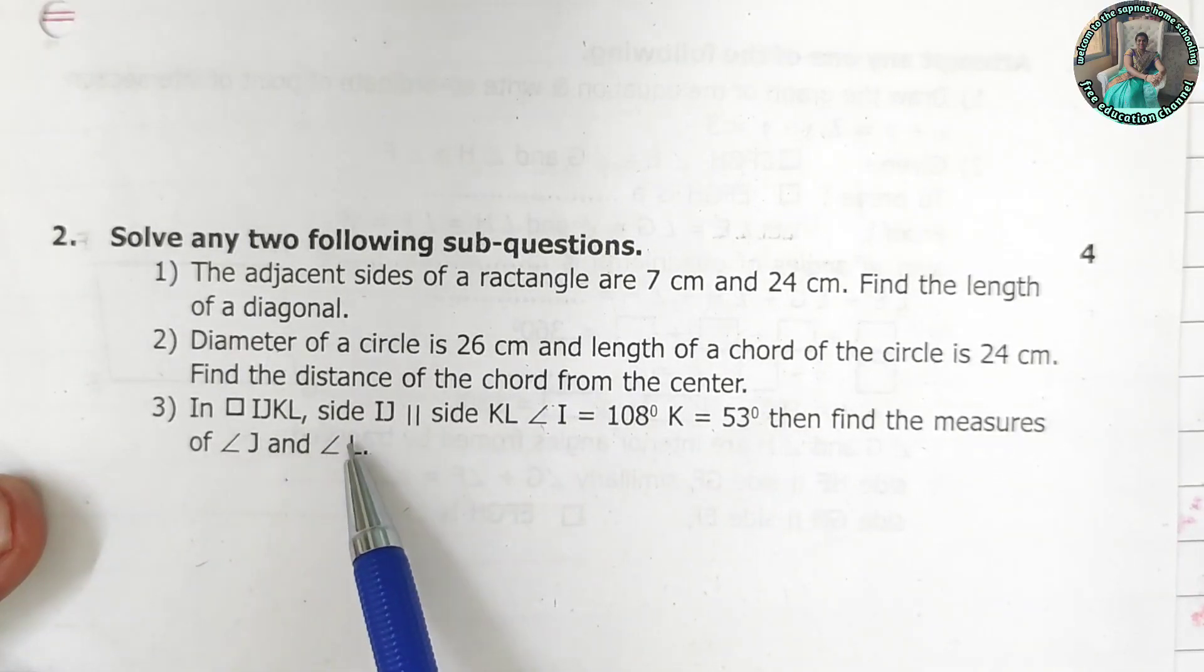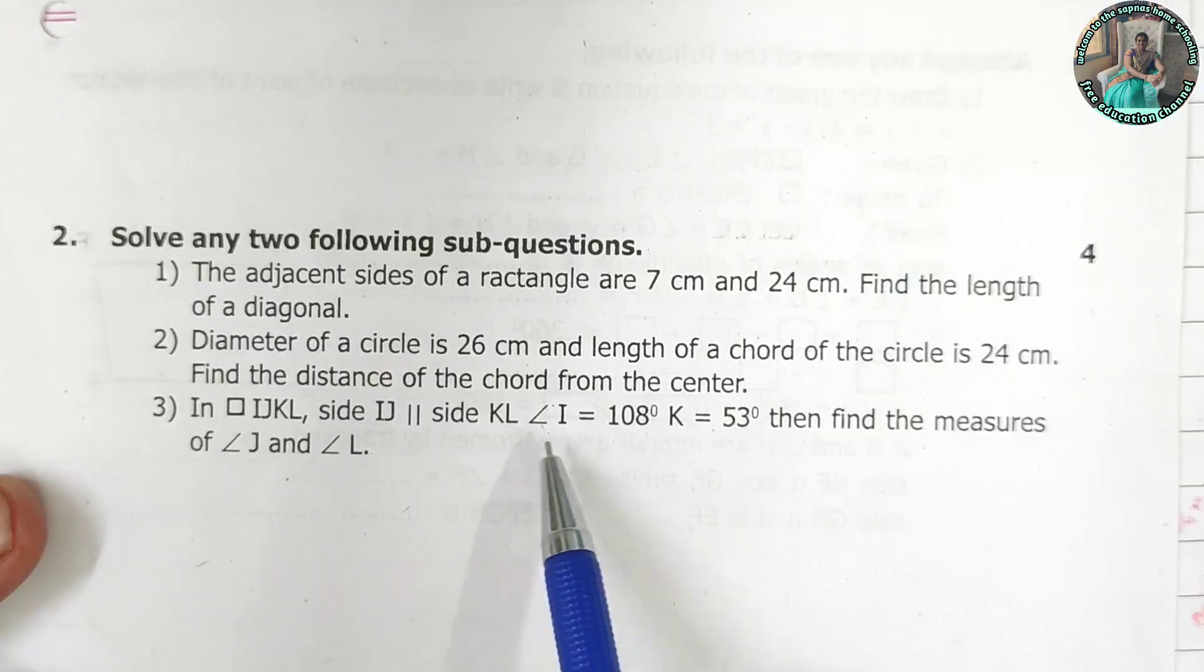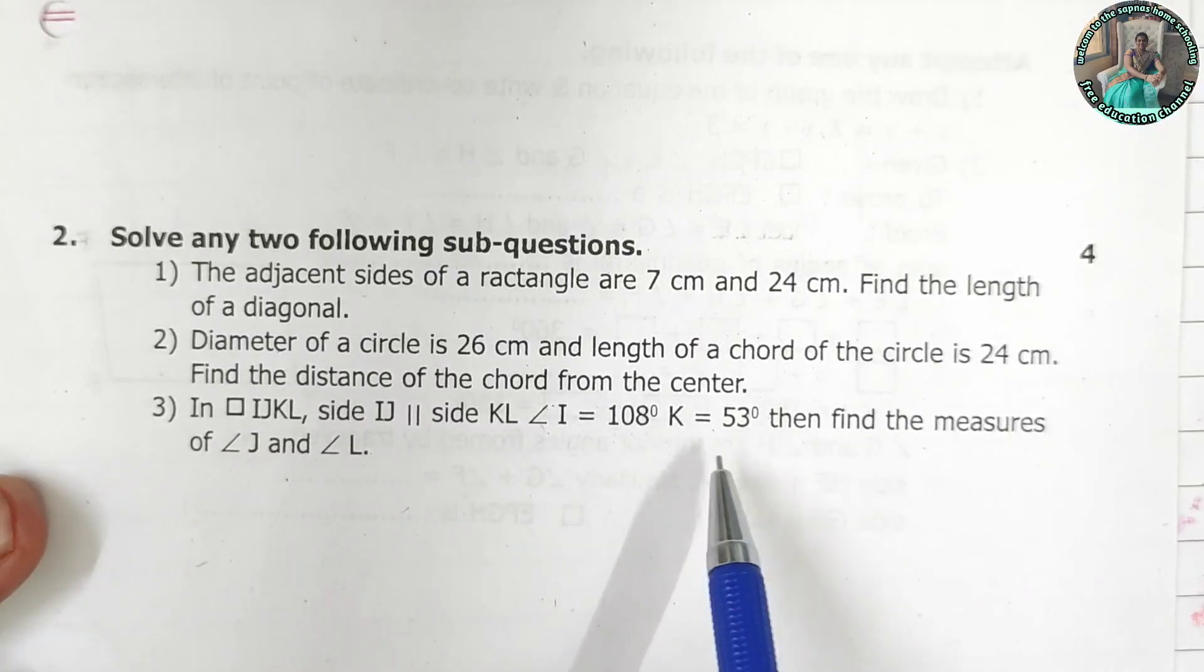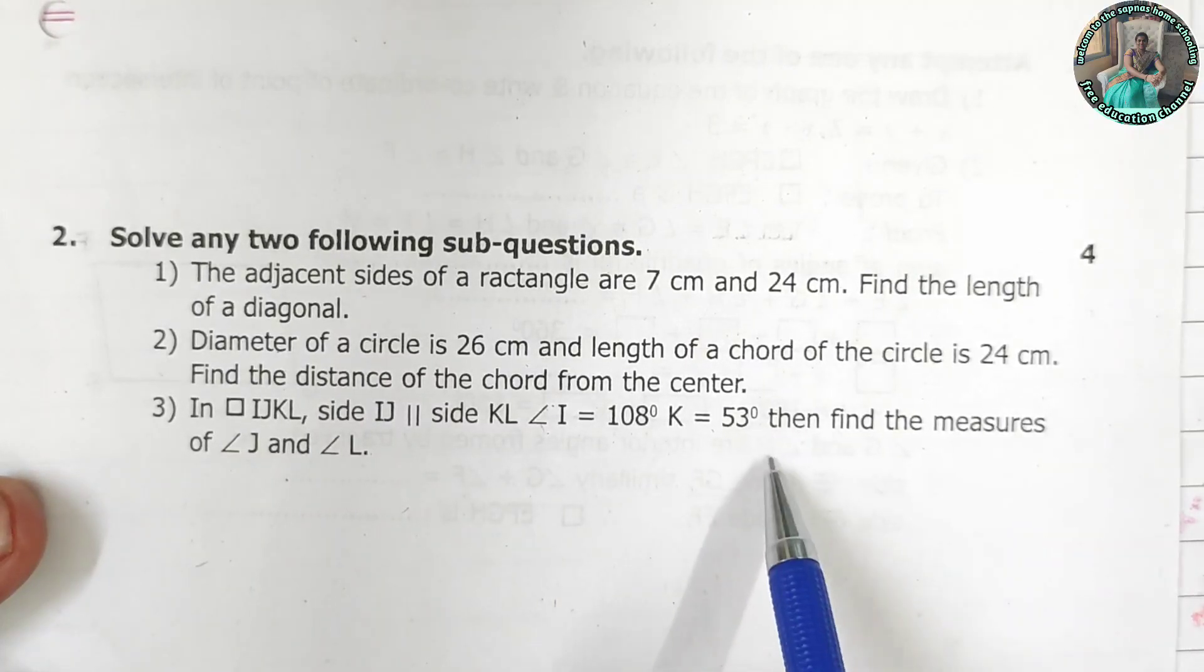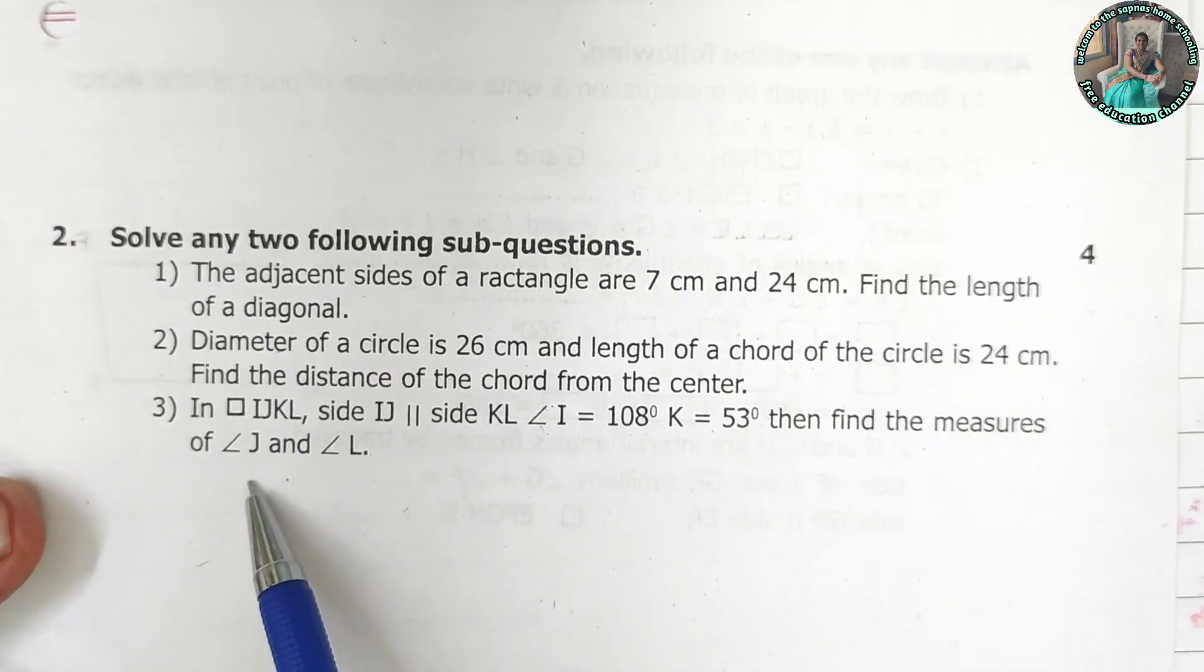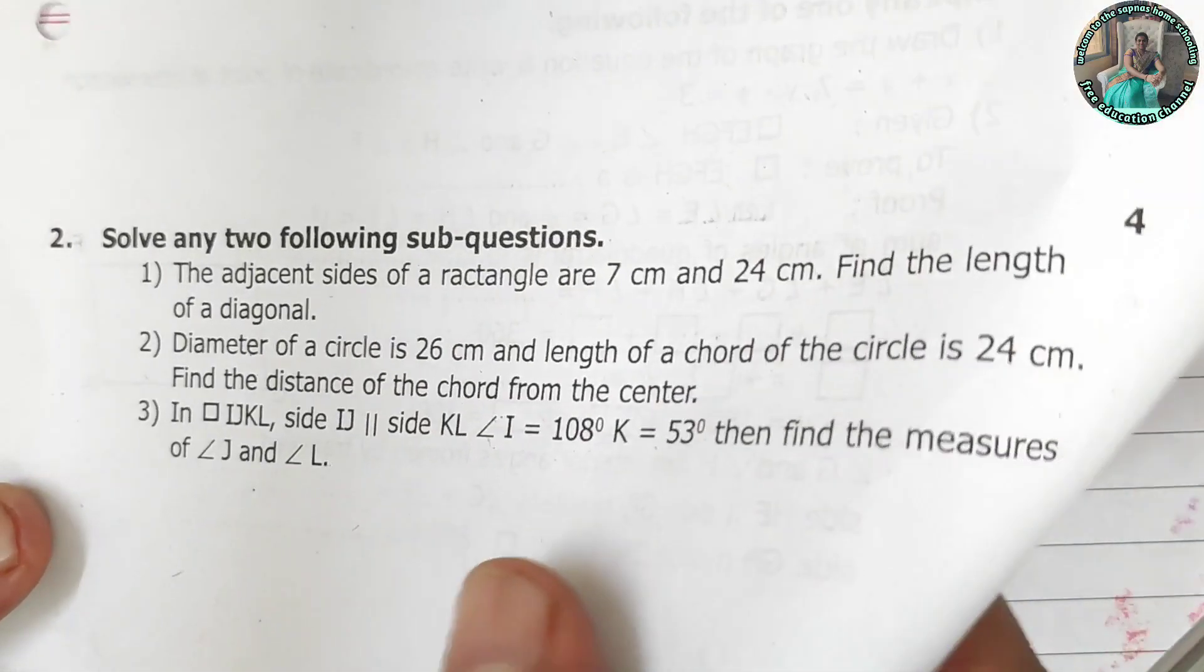If quadrilateral ij kl side ij is parallel to side kl. Angle i is equal to 108 degree. Angle k is equal to 53 degree. Then find the measures of angle j and angle l. Now turn to page 2.